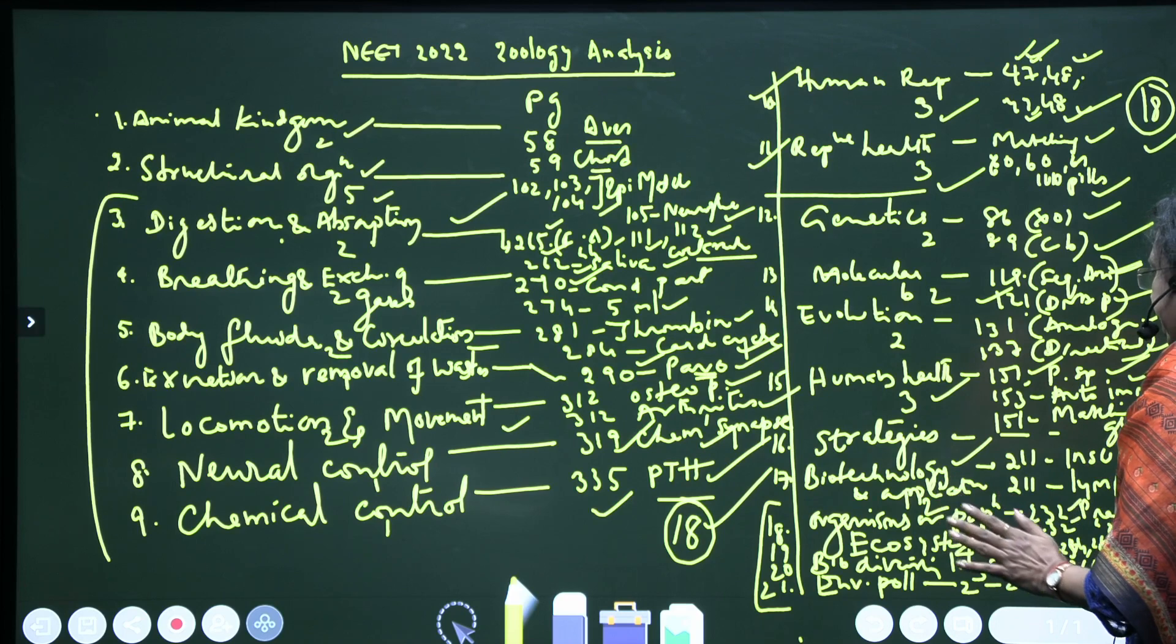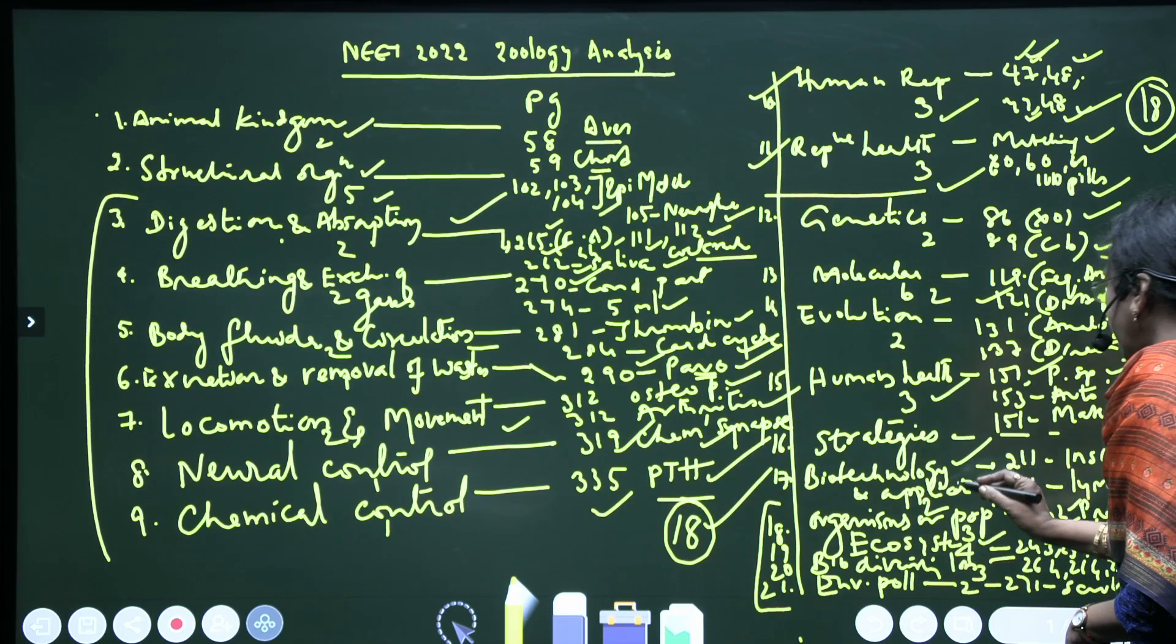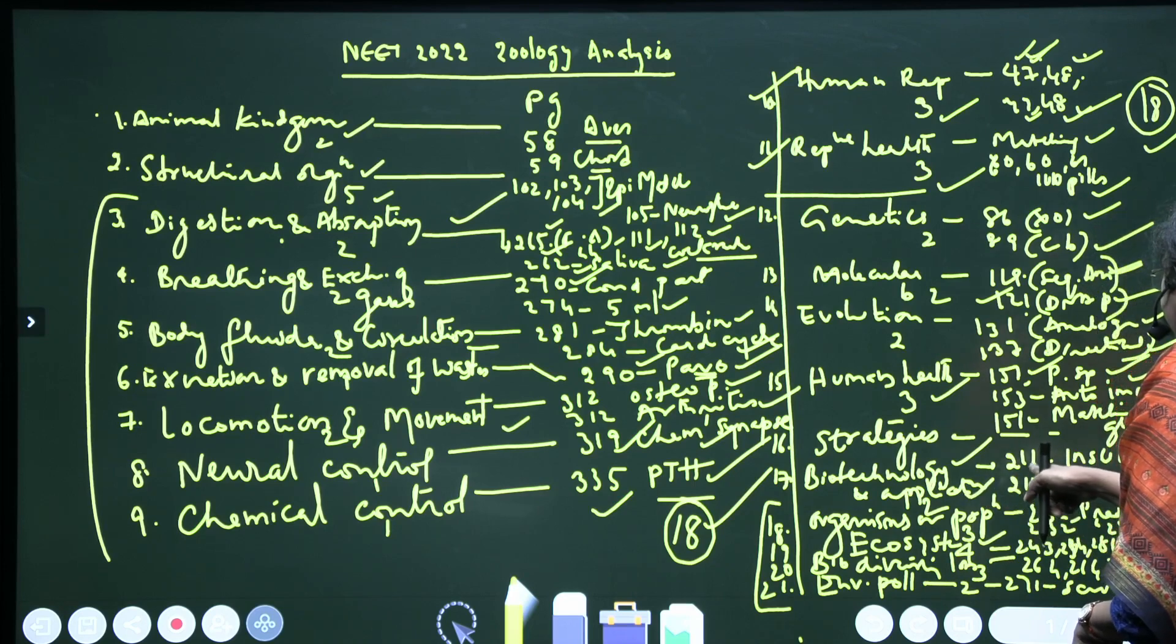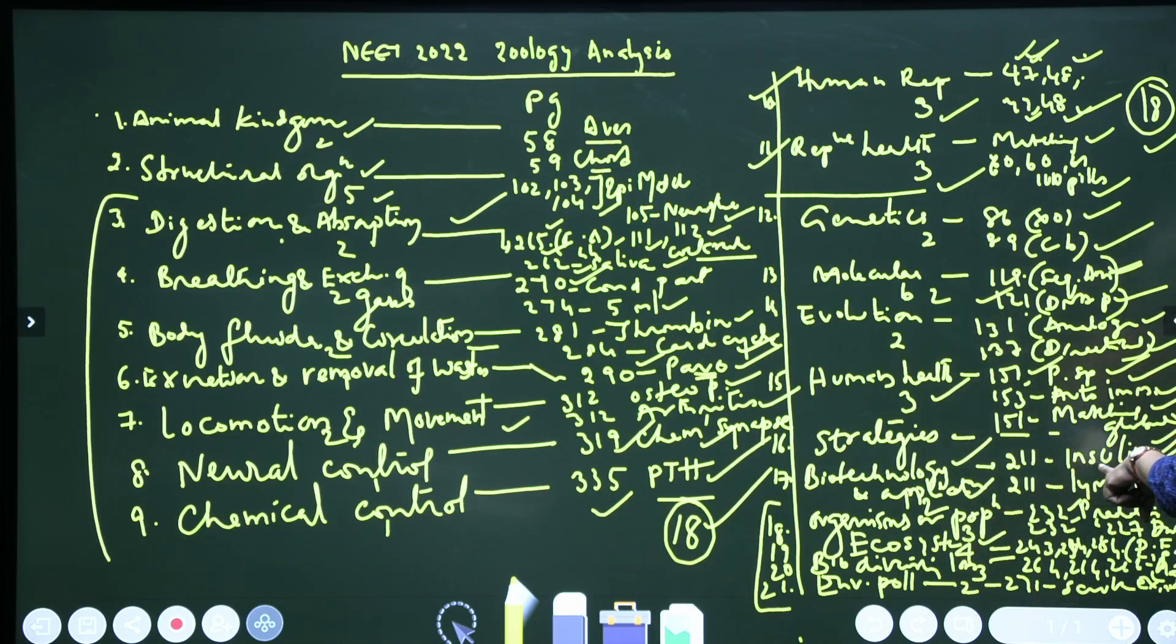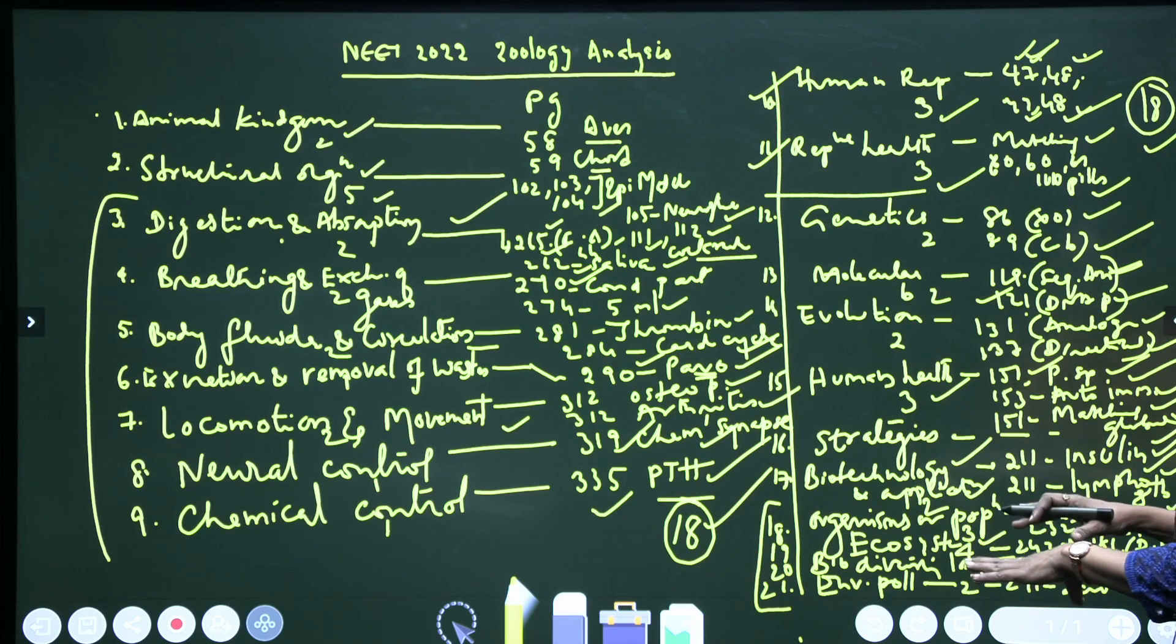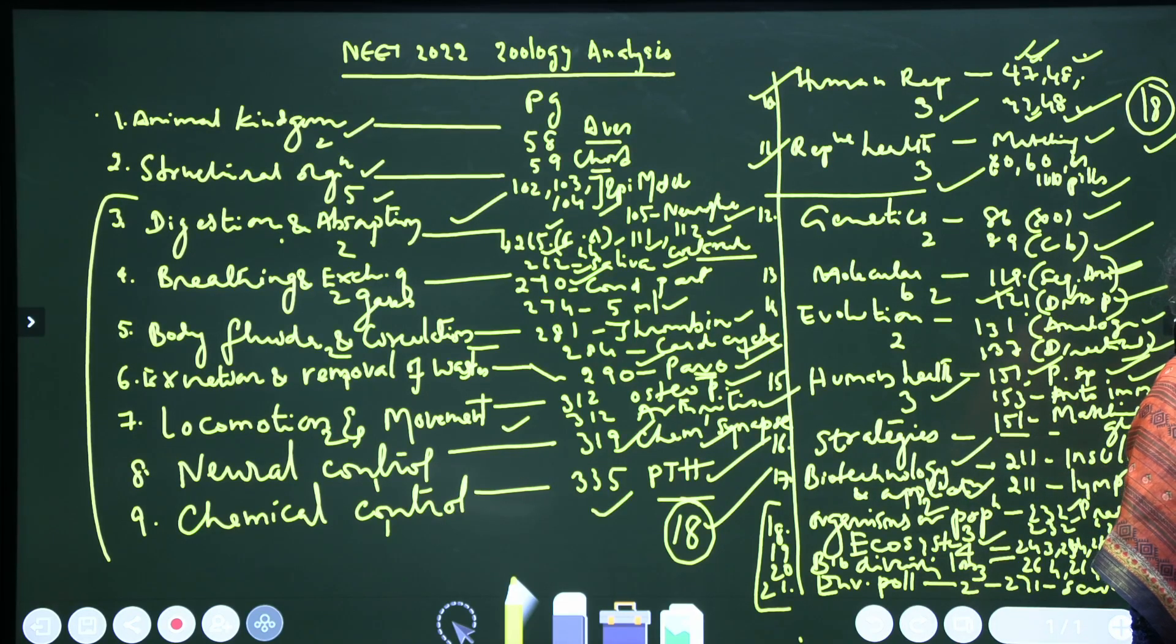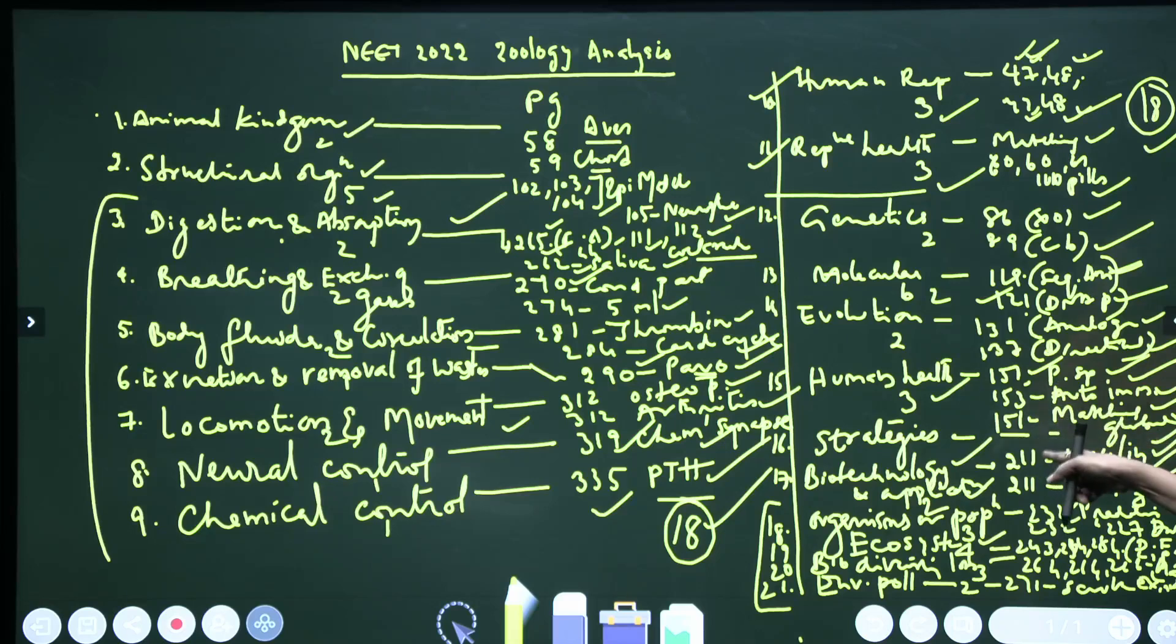Next, Biotechnology and Applications. Here, page 211, insulin is very important because in 2020 it is given, 2021 it is given, 2022 it is given. All the statements will be given; they will ask either incorrect or correct. And page 211, lymphocytes: here gene therapy, again the question came for 2021 and 2022, because these lymphocytes are not immortal, that's why we cannot take it as a permanent remedy.